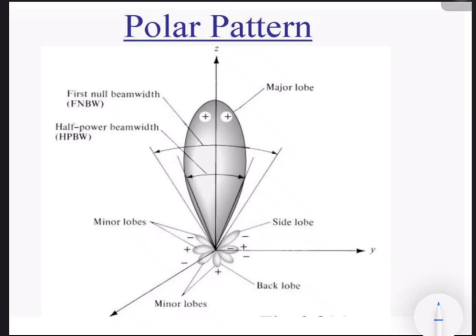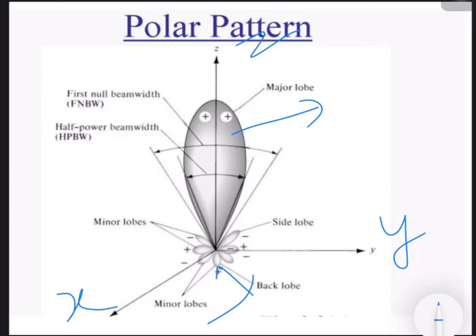Field pattern value is 0.707, power pattern value in linear scale is 0.5, and power pattern value in dB is minus 3 dB — please keep this in mind as it can be asked as an MCQ in the lab or exam. This is the polar pattern in which the radiation pattern is expressed in the X, Y, and Z coordinate system.